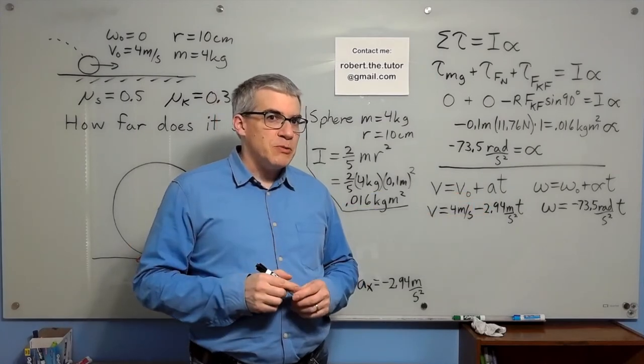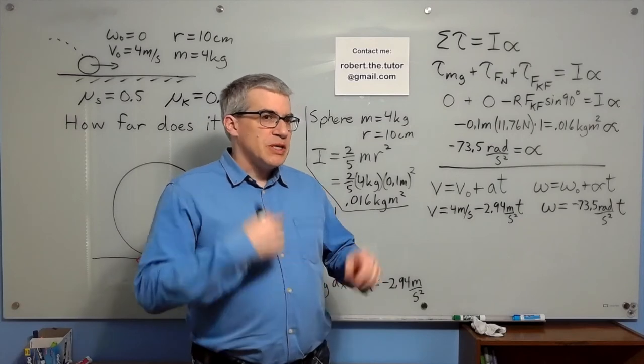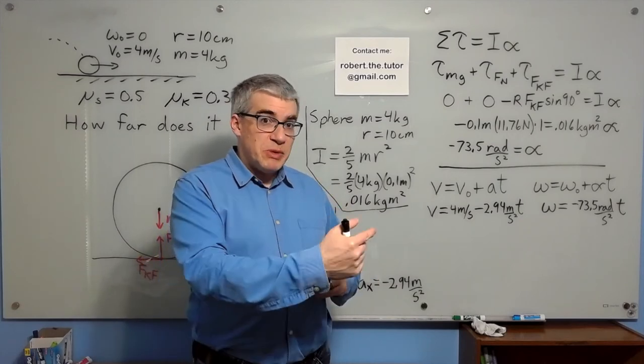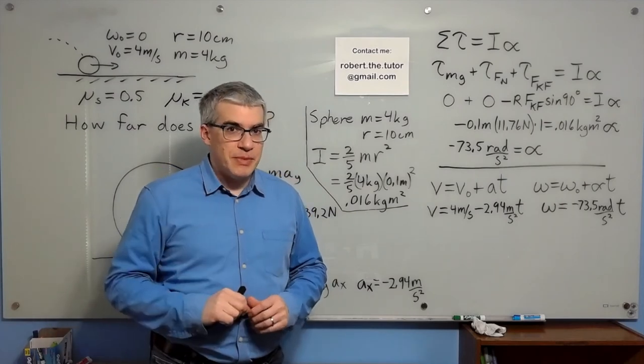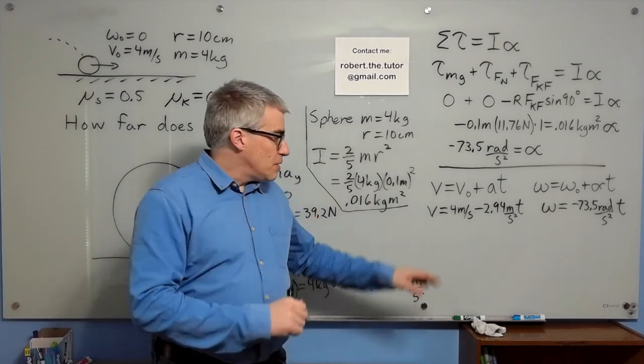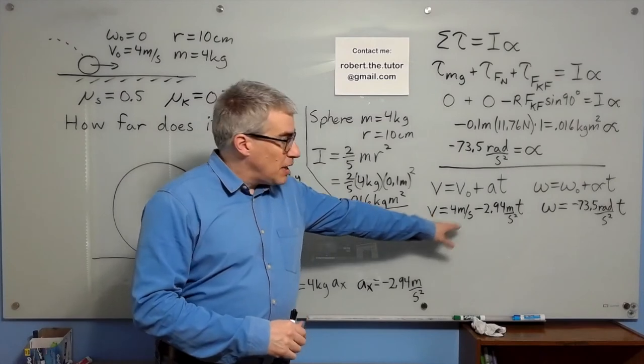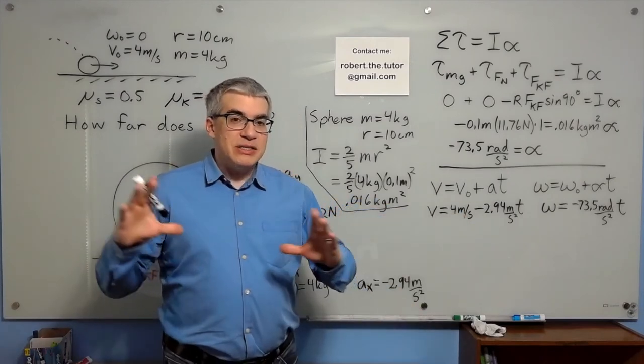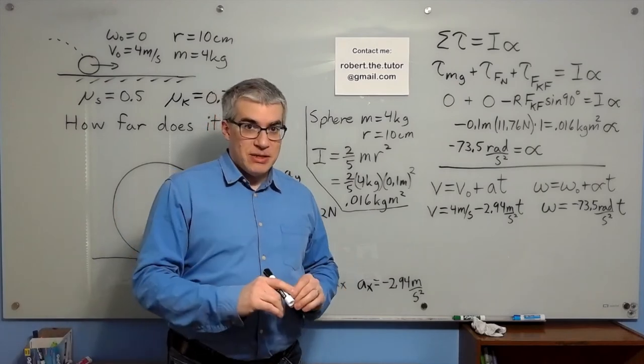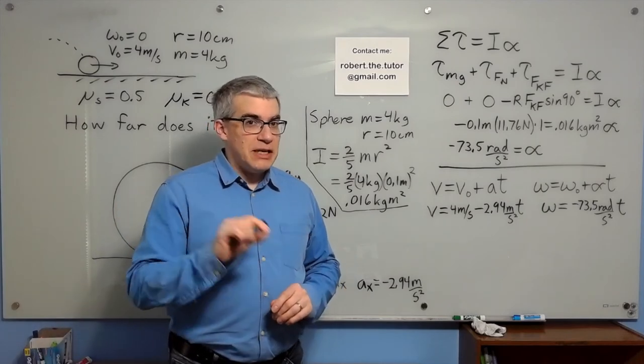When something's spinning, that's supposed to be the speed, right, of the rim? But here's the thing, the ball is skidding. While it is skidding, the velocity keeps going down, and the omega keeps going up. And that's going to happen until they synchronize.